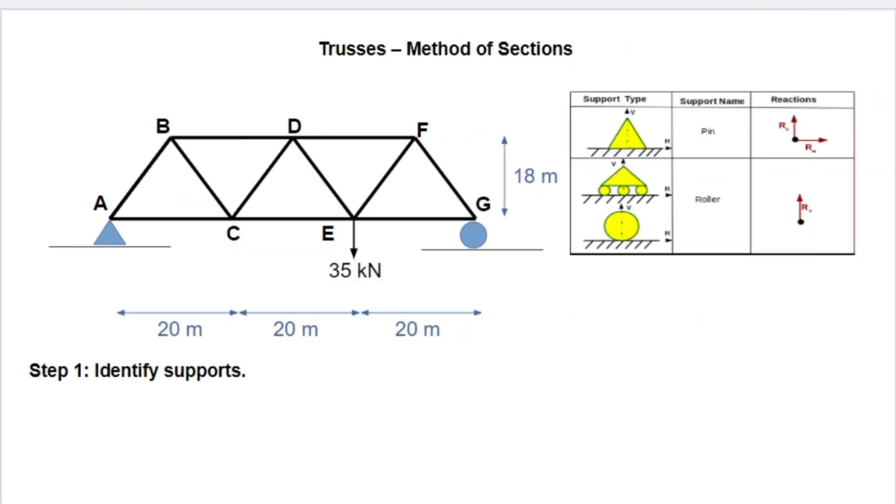So our first step is to identify our supports. Now, if you have a chart handy, that makes it pretty easy. We can quickly identify this is a pin support, this is a roller support, and we can see what the reactions at those points are. If you don't have a chart, which isn't in the handbook, you can identify what kinds of support reactions you'll have based on which type of motion is limited at a particular support.